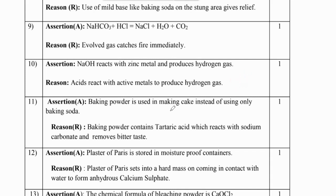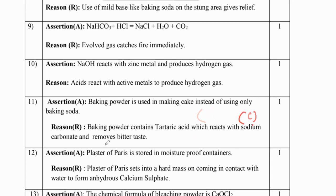Question number 11: baking powder is used in making cake instead of using only baking soda - this is true. The reason says baking powder contains tartaric acid which reacts with sodium carbonate and removes bitter taste - this is false. So C is the correct answer.